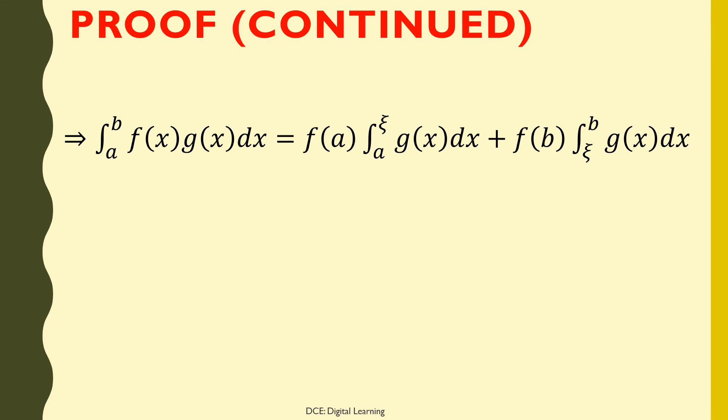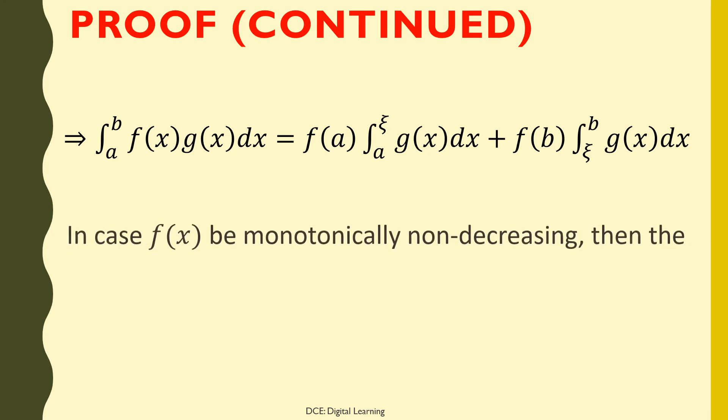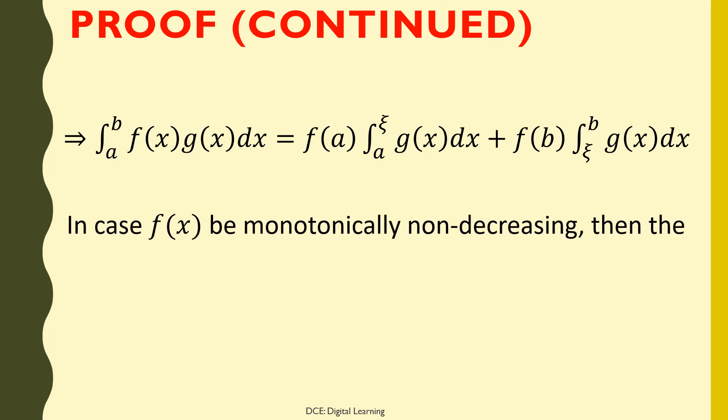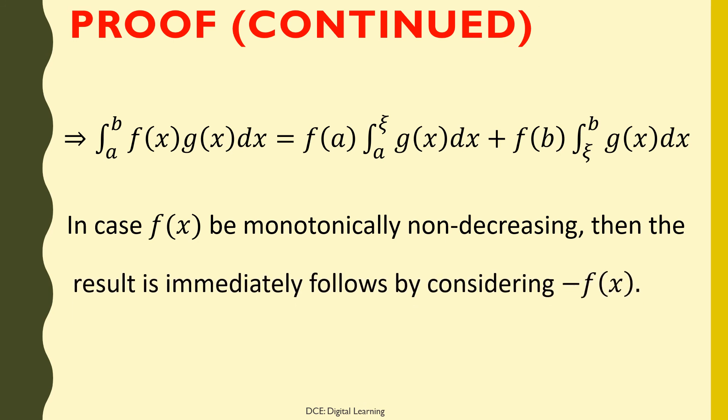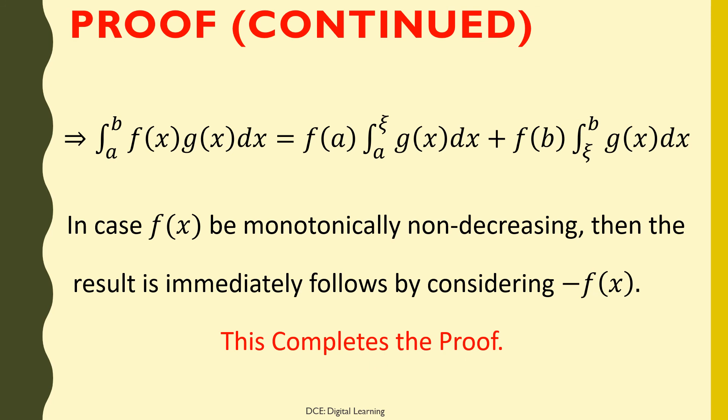Which is the required result. In the case where f(x) is monotonically non-decreasing, the result follows immediately by considering −f(x). This completes the proof of the Weierstrass Mean Value Theorem.